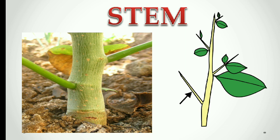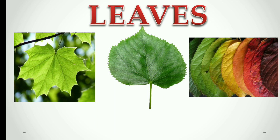The stem supports the plant. The next part we are going to learn is leaves. Generally, leaves are green in color, but you can see other colored leaves too. We depend on plants and animals for food, but plants can prepare their own food. Plants are fixed at one place and they cannot move in search of food. Plants make their own food. Leaf is the part of the plant which prepares food for the plant.